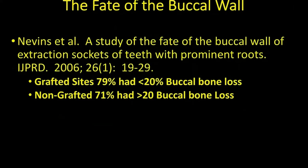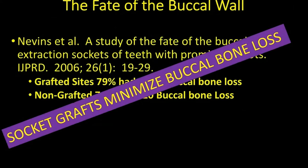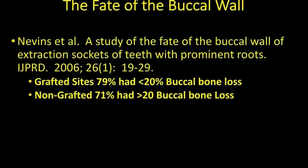Let's start by talking about the fate of the buccal wall — a study by Dr. Myron Nevins. They separated extraction sockets that were grafted versus those that were not grafted. Grafted sites had less buccal bone loss: 79% of grafted sites had less than 20% buccal bone loss, whereas 71% of ungrafted sites had more than 20% buccal bone loss. The bottom line: socket grafts minimize buccal bone loss. Importantly, even when you graft the site, you still lose a little bone — so don't expect to preserve 100% of the bone.